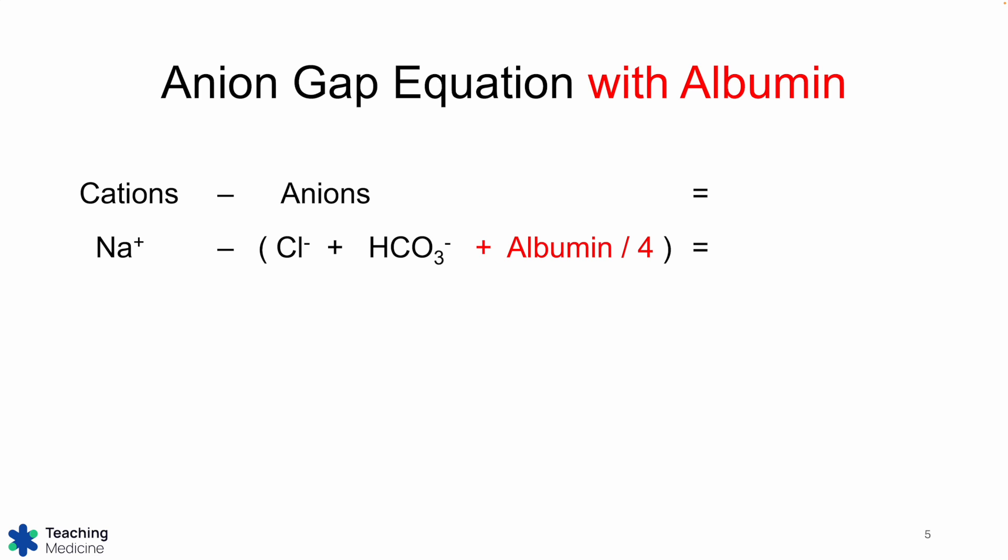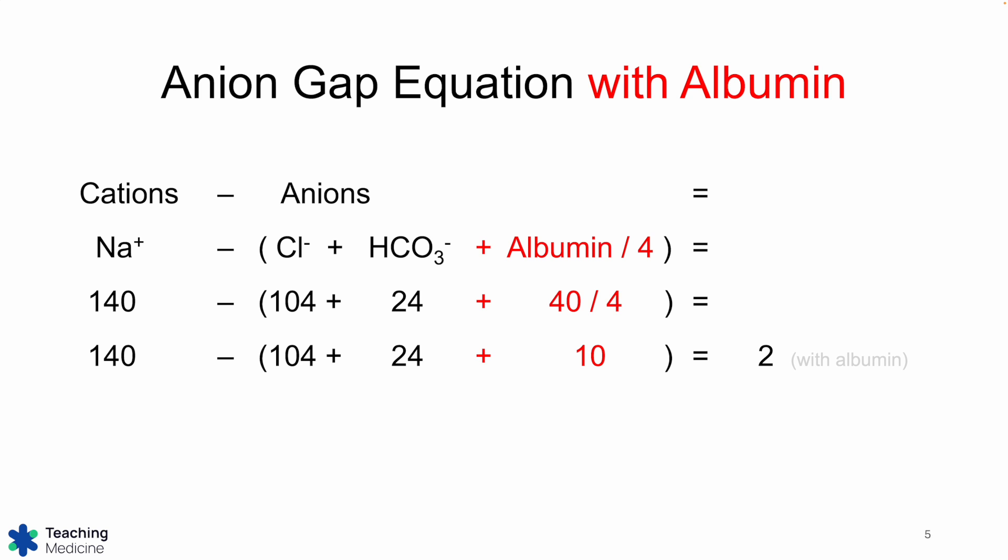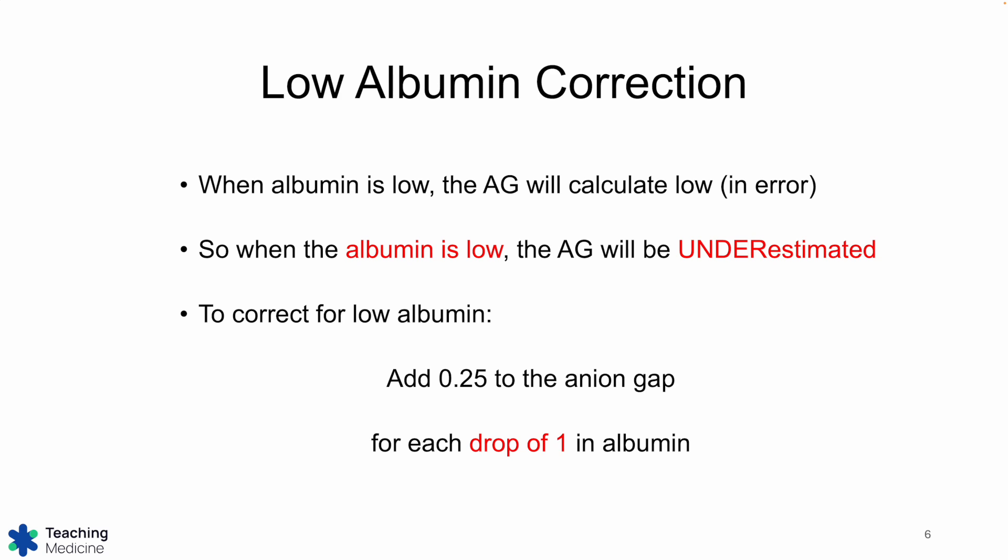When we do the anion gap equation with albumin, we see that it comes out to maybe 2, which is acceptable — pretty close to 0. But what do we do when albumin is really low? When it's really low, we will underestimate the true anion gap. So if you don't make a correction for albumin, you will calculate the anion gap and it will come out lower than the true value.